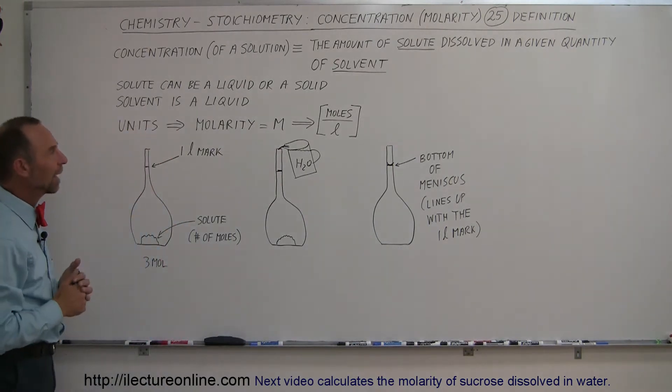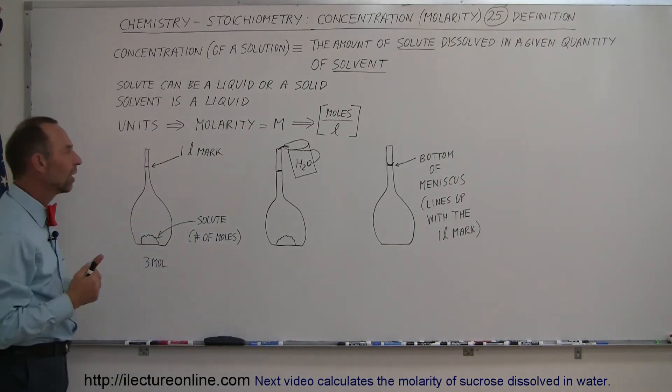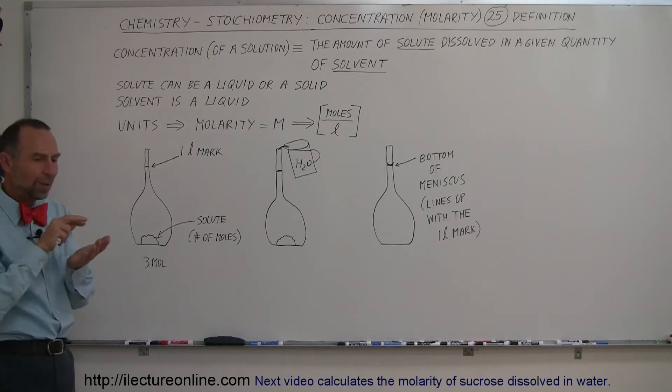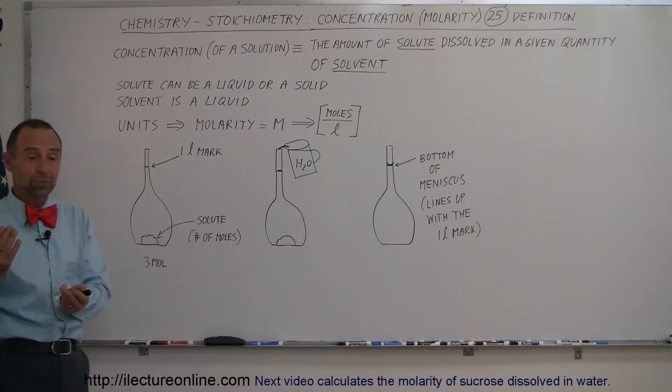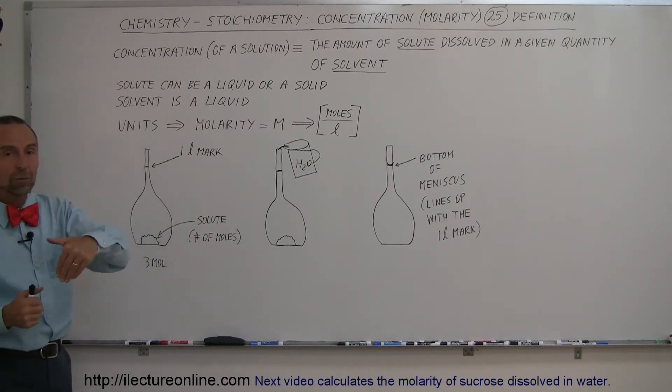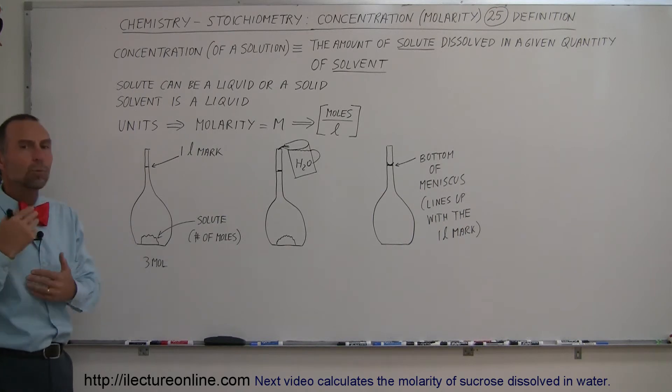So to standardize that, the way we came up with it was that we want to know how much we have in a given liter of the solution. Now the solution is both the solvent and the solute together. So what you can't do is first put in, for example, a liter of water, and then add some solute to that, because then you end up with more than a liter.